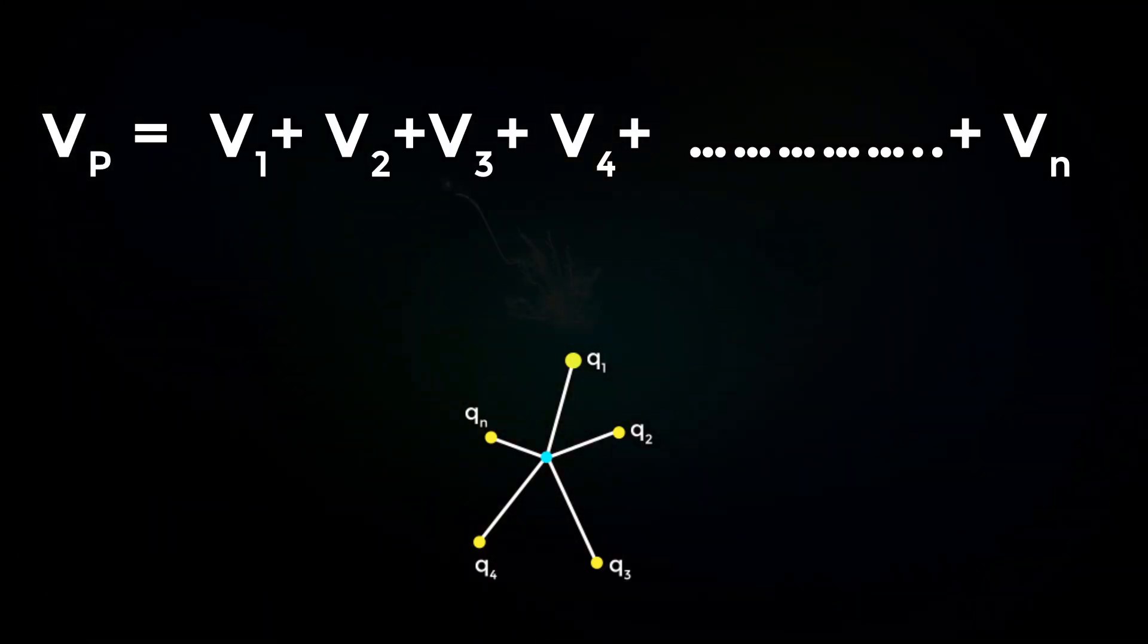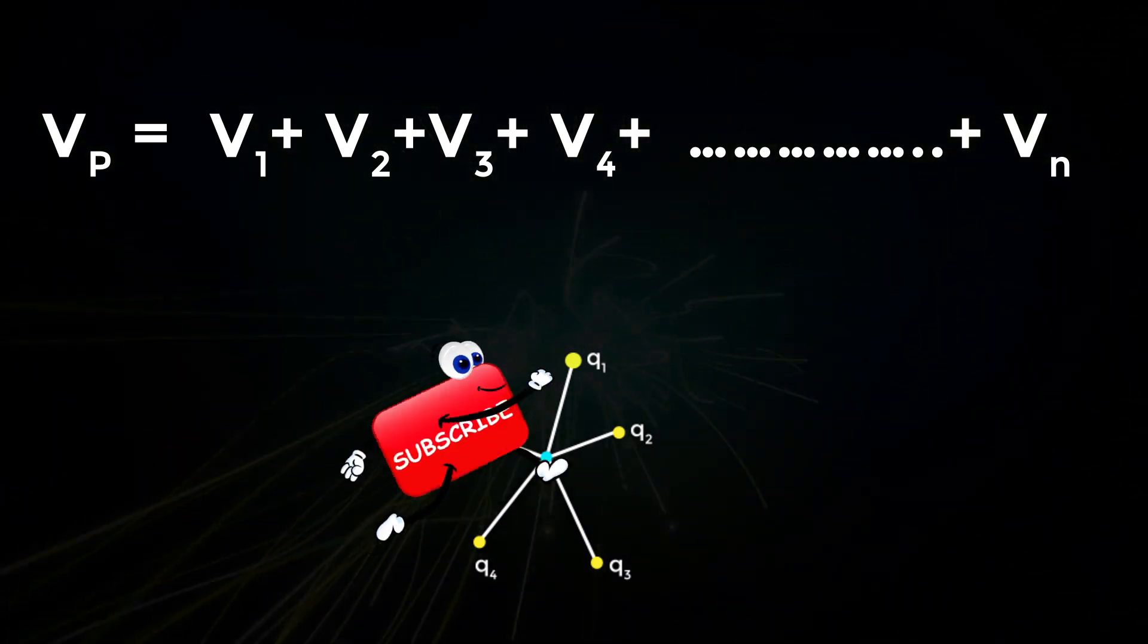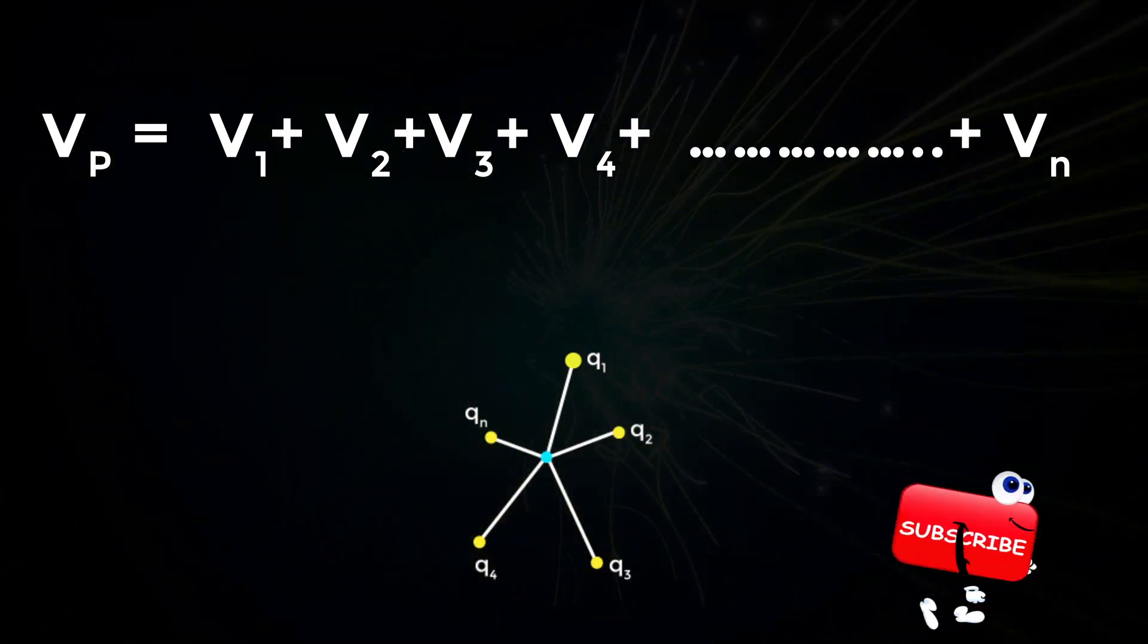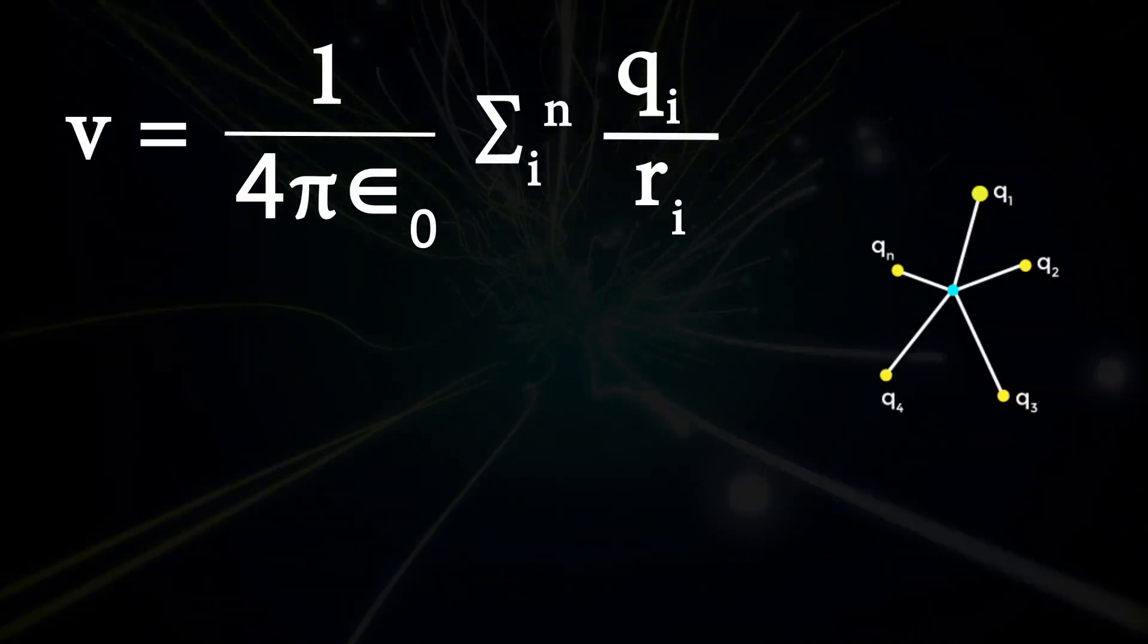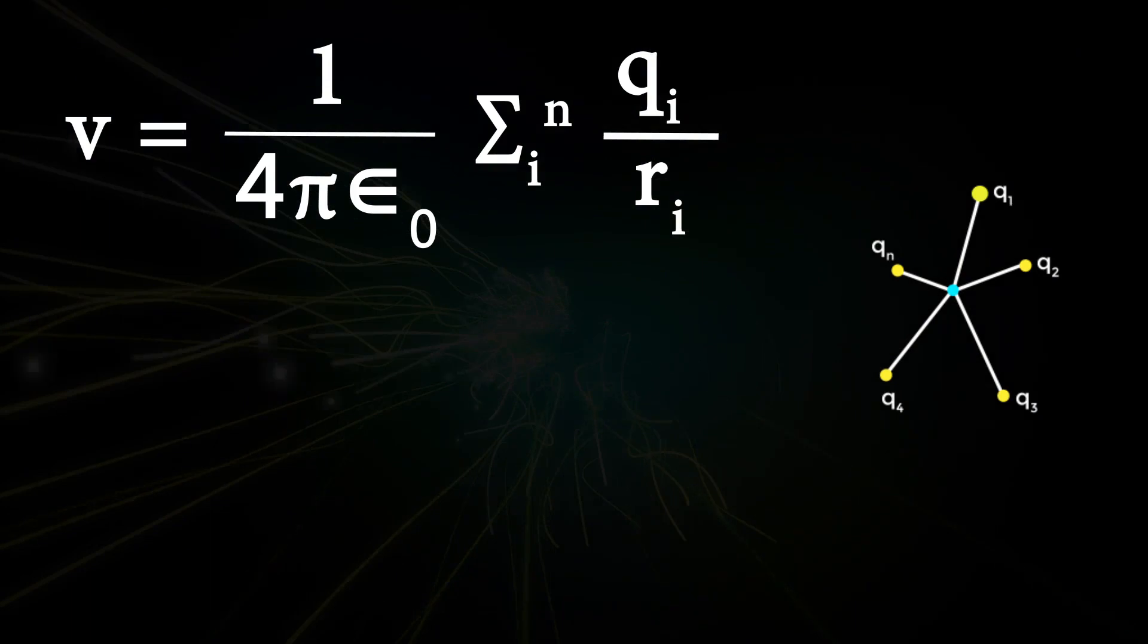Vp is equal to V1 plus V2 plus V3 plus V4 plus so on until plus Vn. V is equal to sigma from i to n qi by ri.